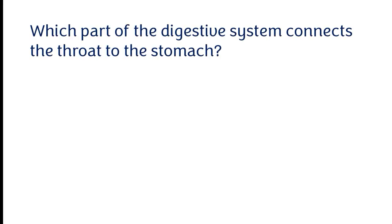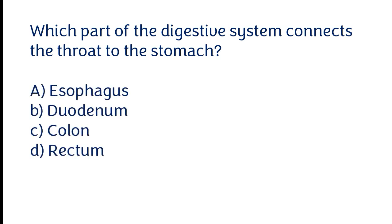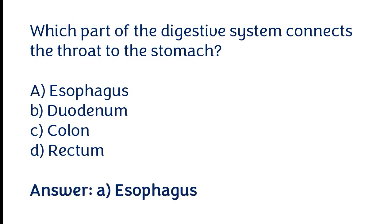Which part of the digestive system connects the throat to the stomach? Options: a) Esophagus, b) Duodenum, c) Colon, d) Rectum. The correct answer is option A. The esophagus connects the throat to the stomach.